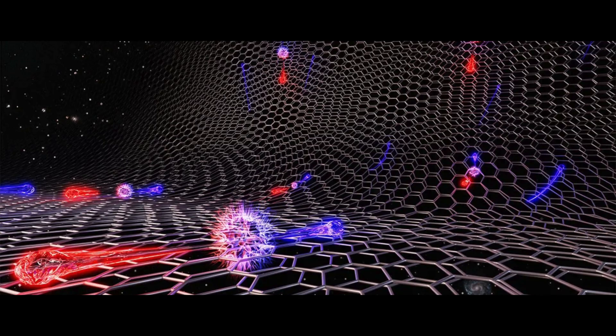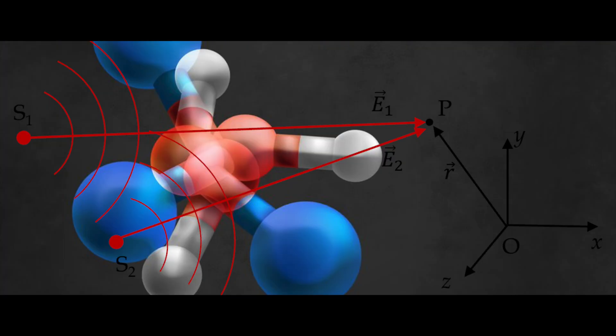In the quantum world, particles like electrons and photons behave in ways that defy conventional logic. They exhibit properties of both particles and waves, existing in multiple states at once until they are observed. This phenomenon is encapsulated in the concept of superposition.